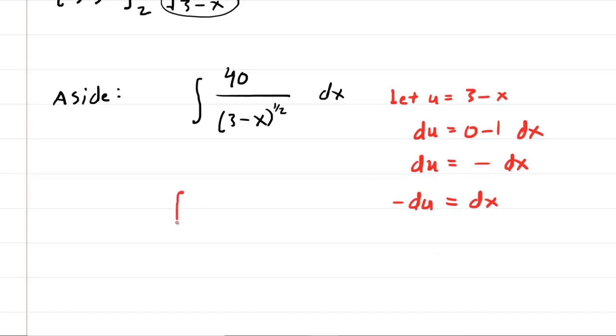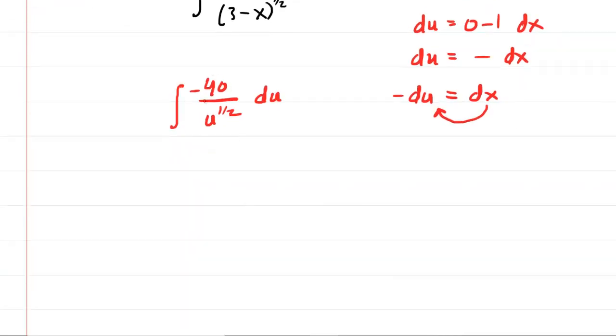So now we rewrite the integral. We have the integral of 40 over, now the 3 minus x will be substituted of course with u. So you have u to the power of 1 half. The dx is going to be substituted with negative du. So for that you can put the du here. You can put the negative sign in front of that constant right there. In fact, let's tweak it a little further. We'll factor out the constant, so you have negative 40 integral. Now we can move that u to the half to the numerator, and when you move it to the numerator it becomes u to the negative 1 half.